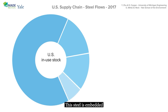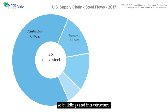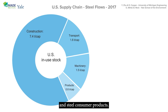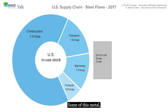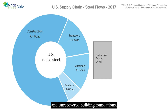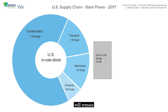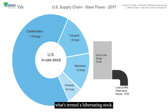This steel is embedded largely in construction — so buildings and infrastructure — transport vehicles, machinery, and steel consumer products. Each year, around 75 million tons of steel stops being used. Some of this metal, such as the reinforcing bars in unrecovered building foundations, will remain unused and becomes what's termed a hibernating stock.